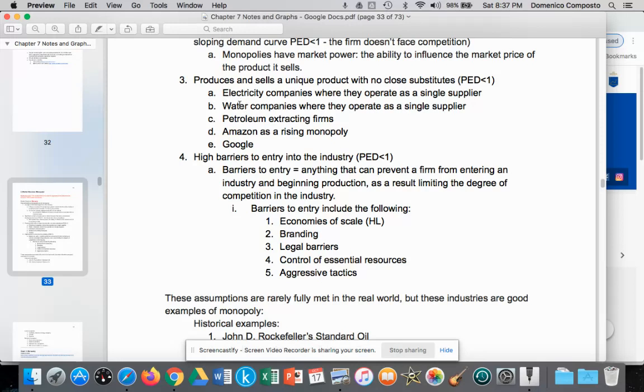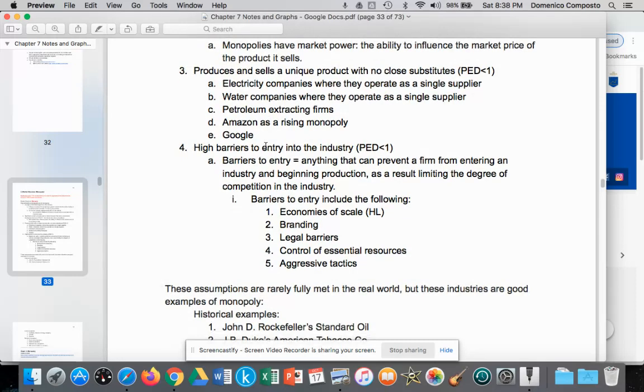Other examples might be petroleum extracting firms. They control a unique product; there's no close substitute for petroleum in our industrial economy. Our economy, unfortunately, is very dependent on petroleum for the transportation of goods, services, and people, and transportation of inputs.